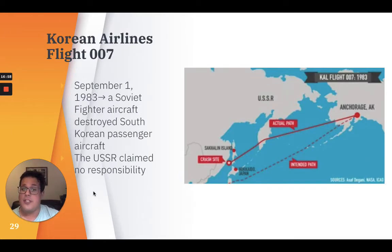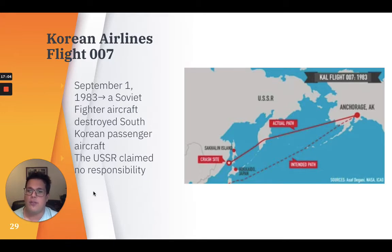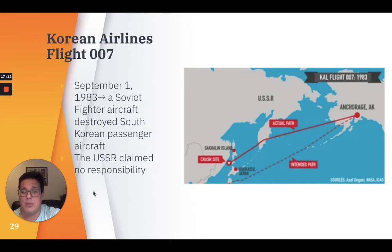On September 1, 1983, tension between the U.S. and the USSR was further increased when a Soviet fighter aircraft destroyed a South Korean passenger aircraft, killing around 269 people on board. This included 61 U.S. citizens. The U.S. was enraged, and the USSR claimed no responsibility.